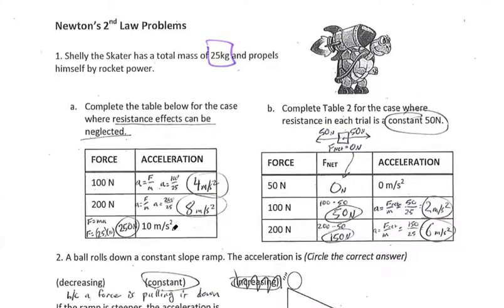All right, let's go ahead and take a look at page 8 here. So it says that Shelley, the skater, has a total mass of 25 kilograms. That's really important. If you had trouble with this page, it's probably because you missed this. And then he propels himself by rocket power, so he's got an applied force in that direction.